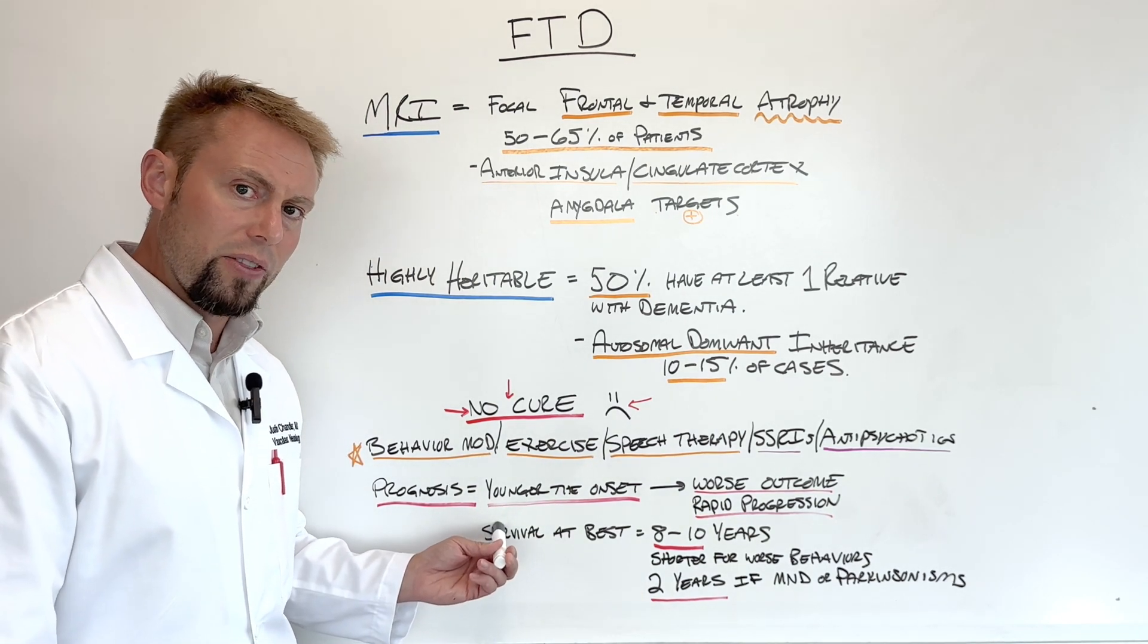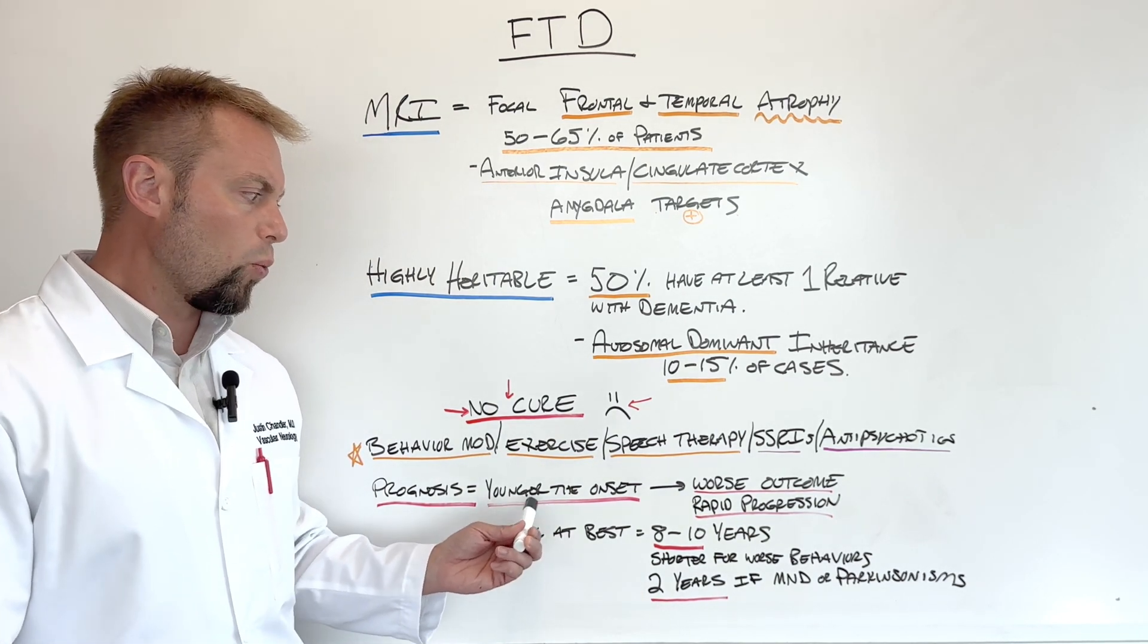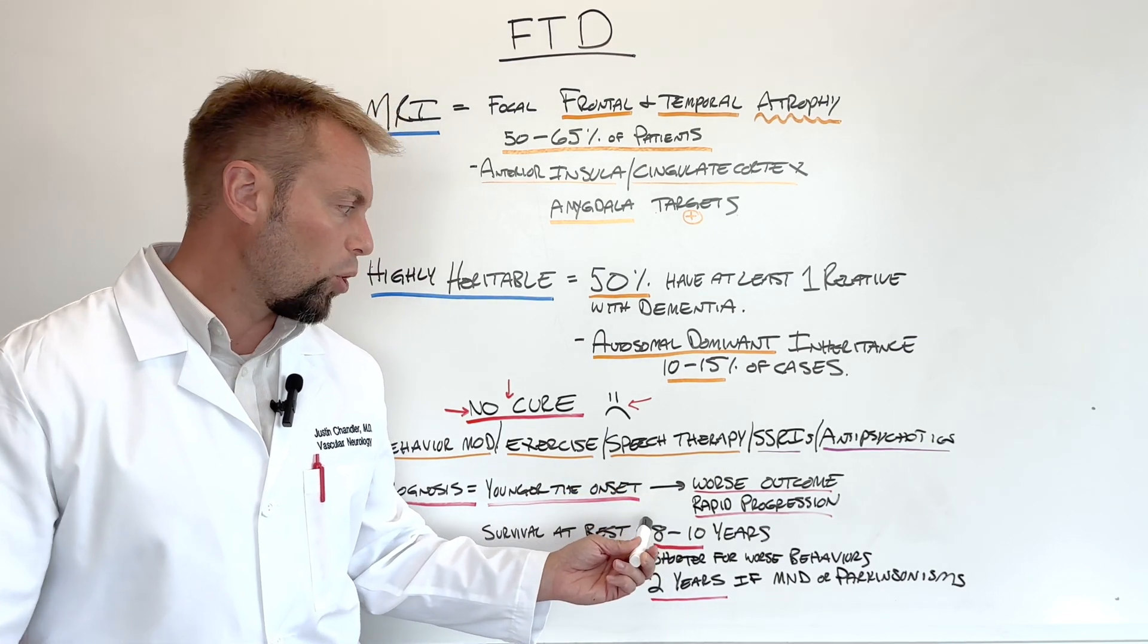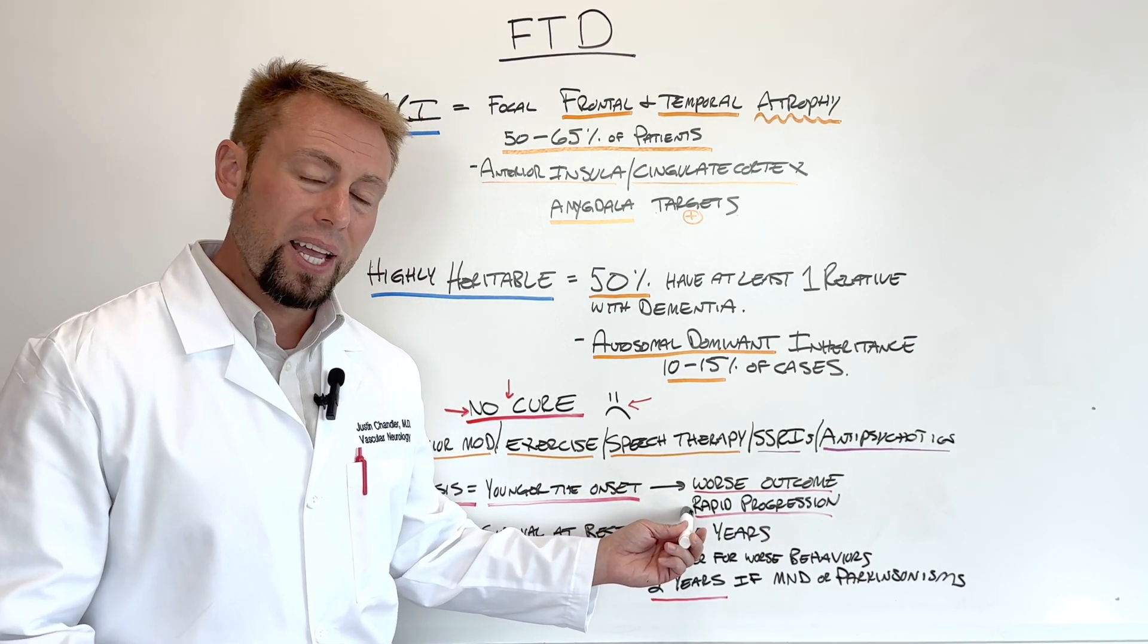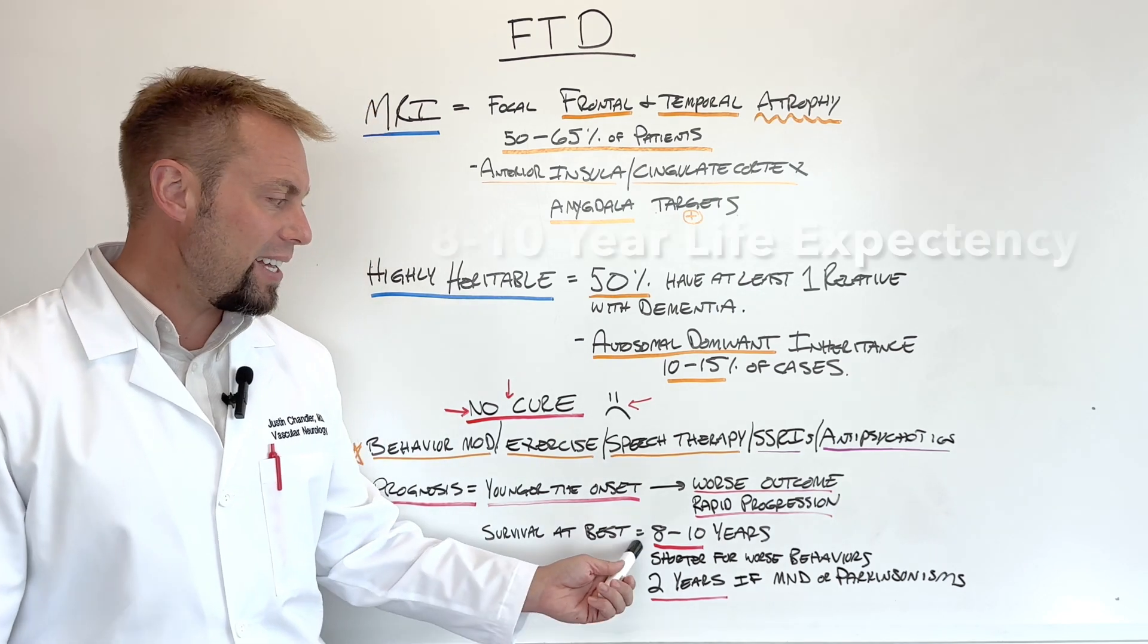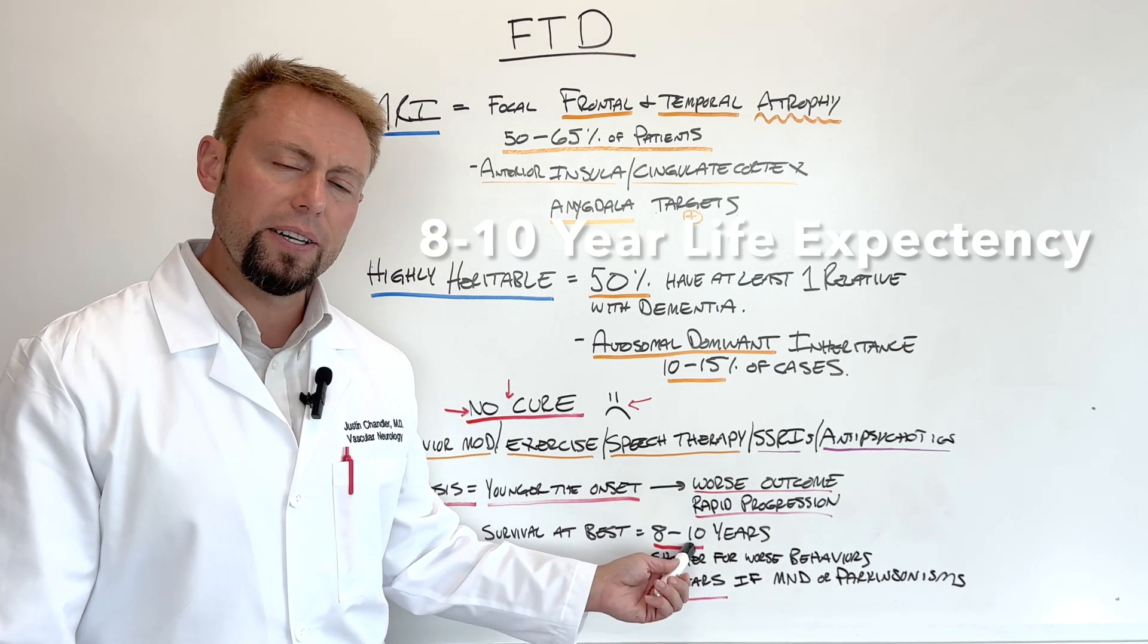When someone is diagnosed with frontal temporal dementia, the younger they're diagnosed with it, the worse the outcome is and the more rapidly it will progress. And at best, people have eight to ten years left of life.